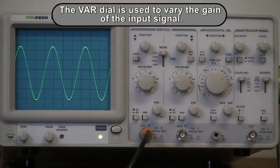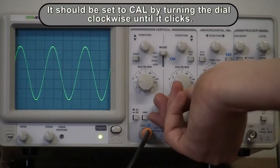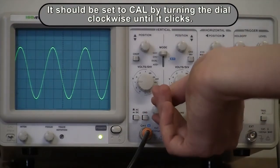The var dial is used to vary the gain of the input signal. It should be set to calibrated mode by turning the dial clockwise until the click is heard.